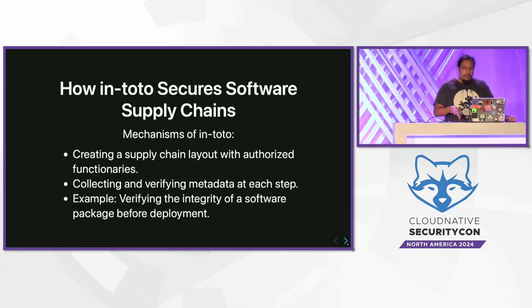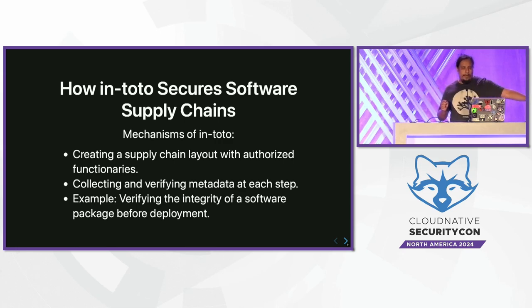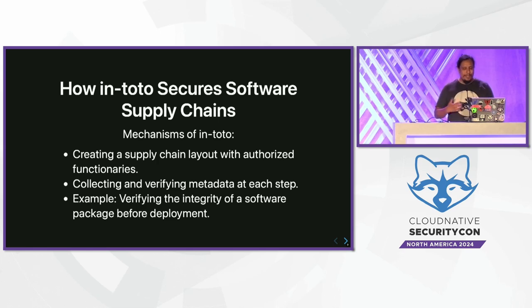In in-toto, you create a layout with what are called functionaries — the individual steps. You execute those functionaries and collect and verify metadata at each step. This gives us the ability to push left and also push right, so that on the left we gather and validate information, and on the right when we deploy, we can make sure things follow the process or have enough evidence to be comfortable executing something.